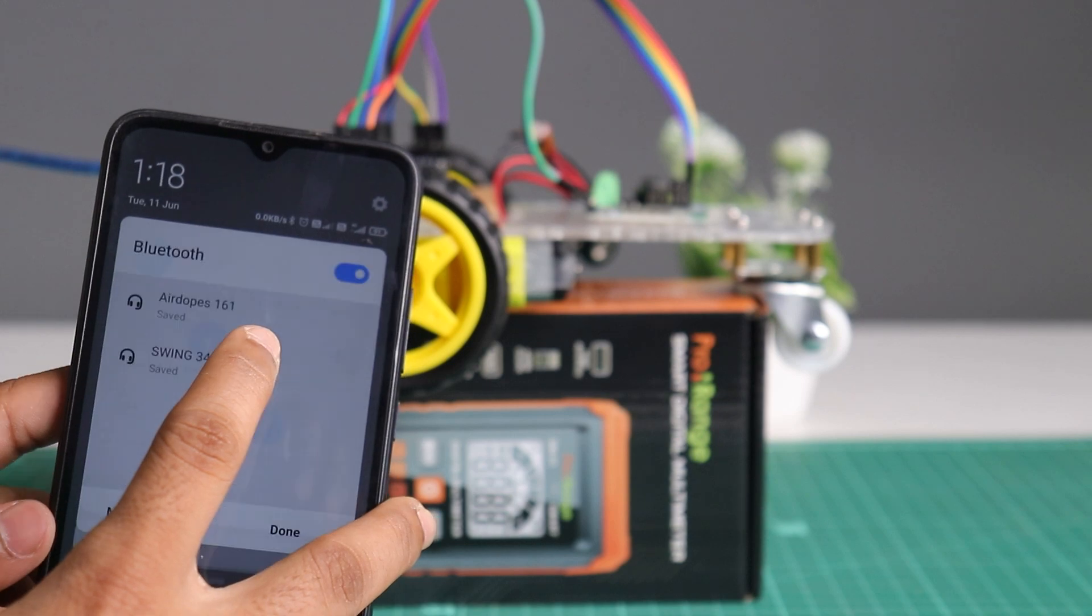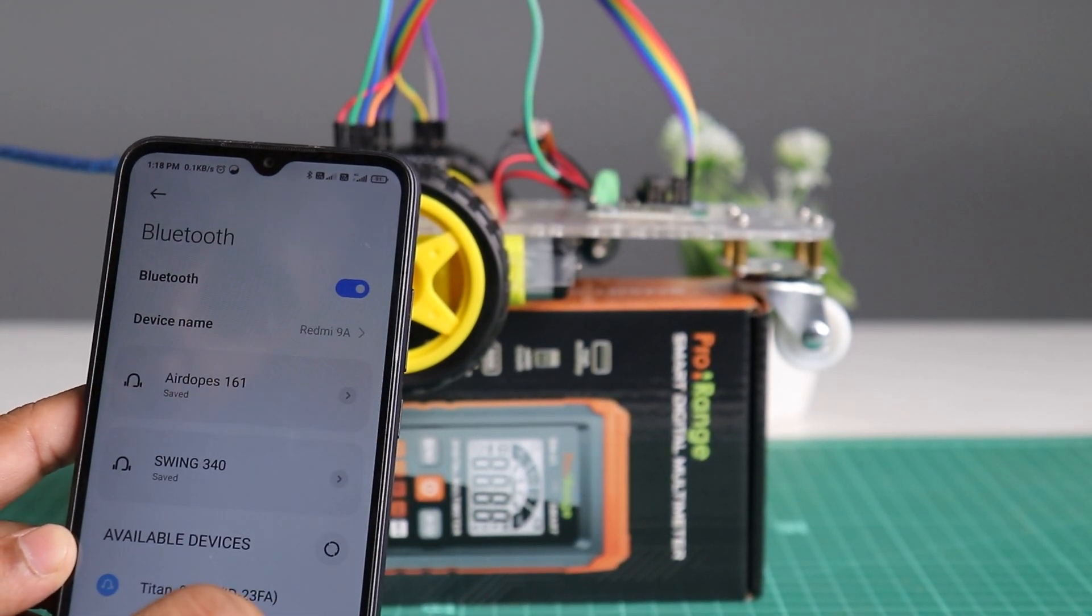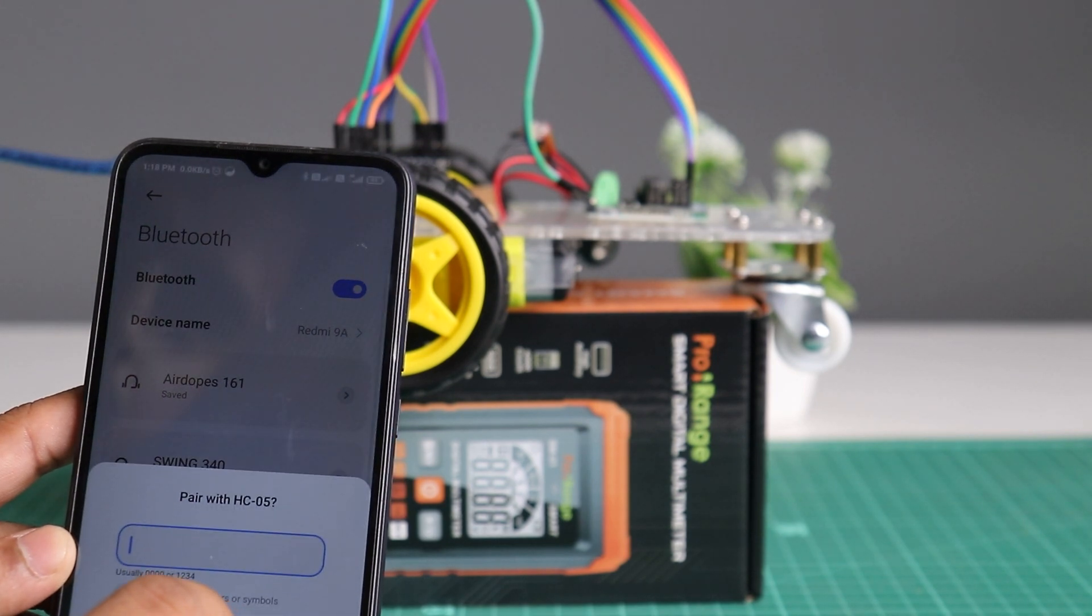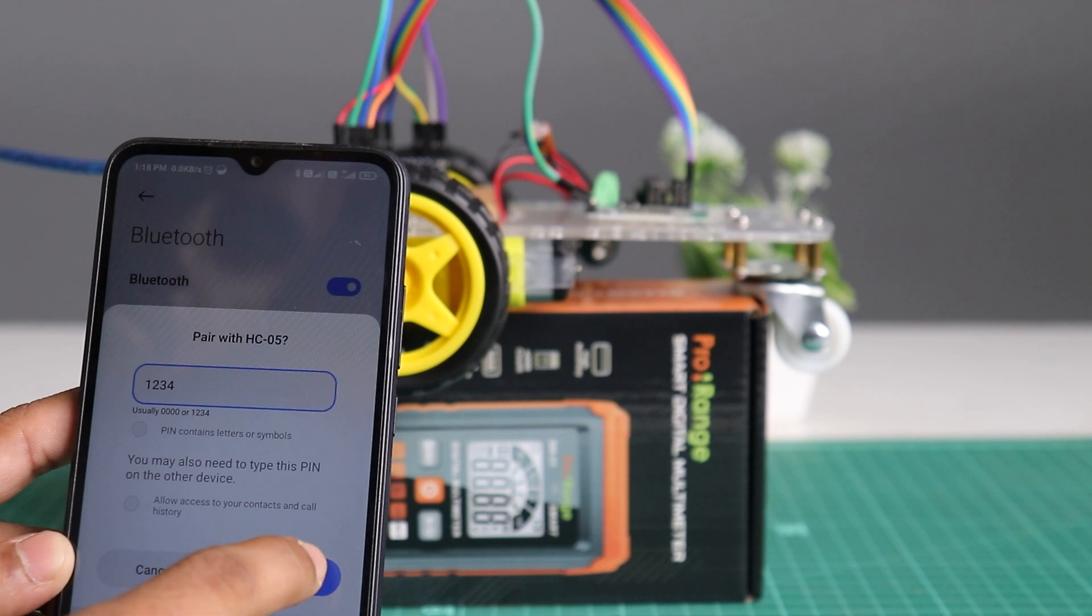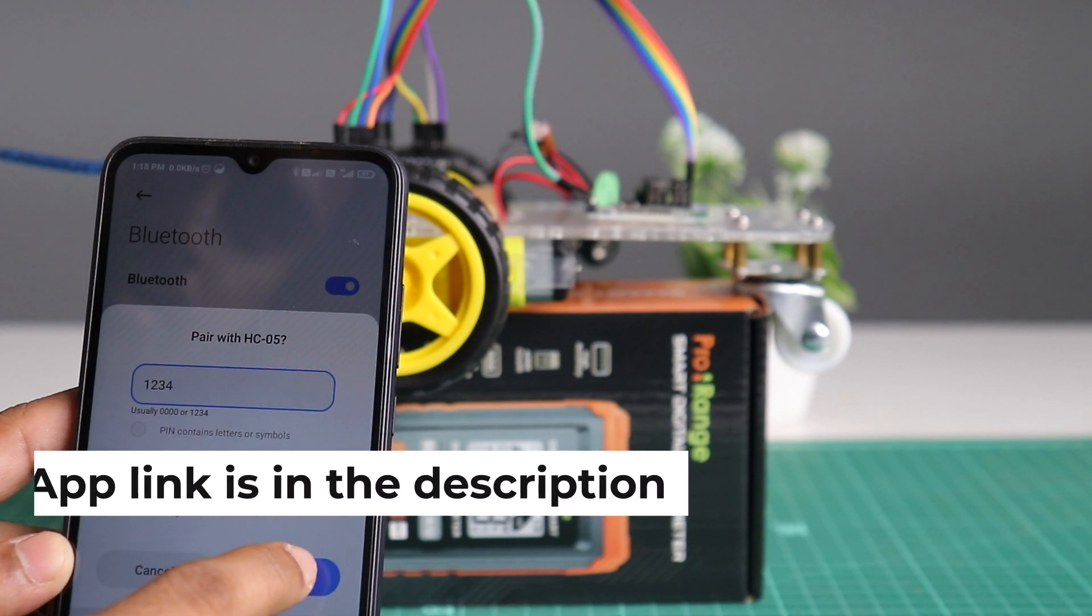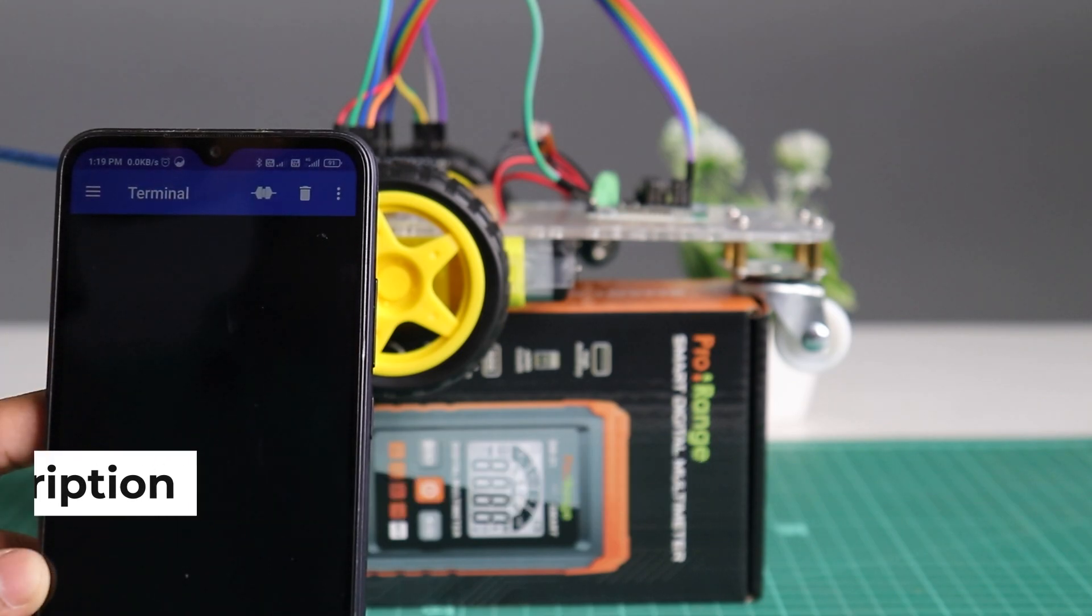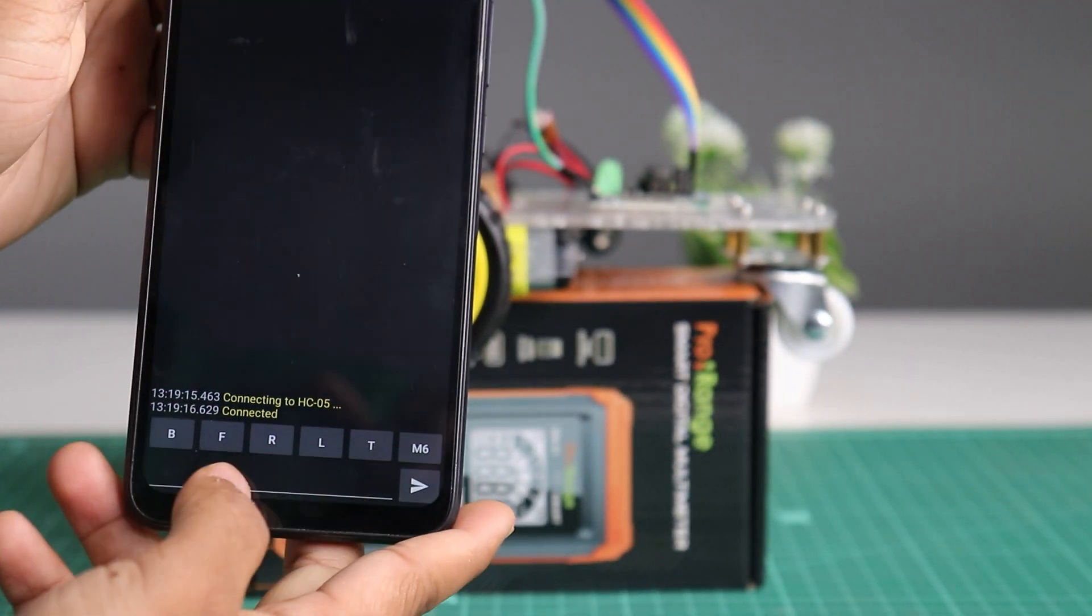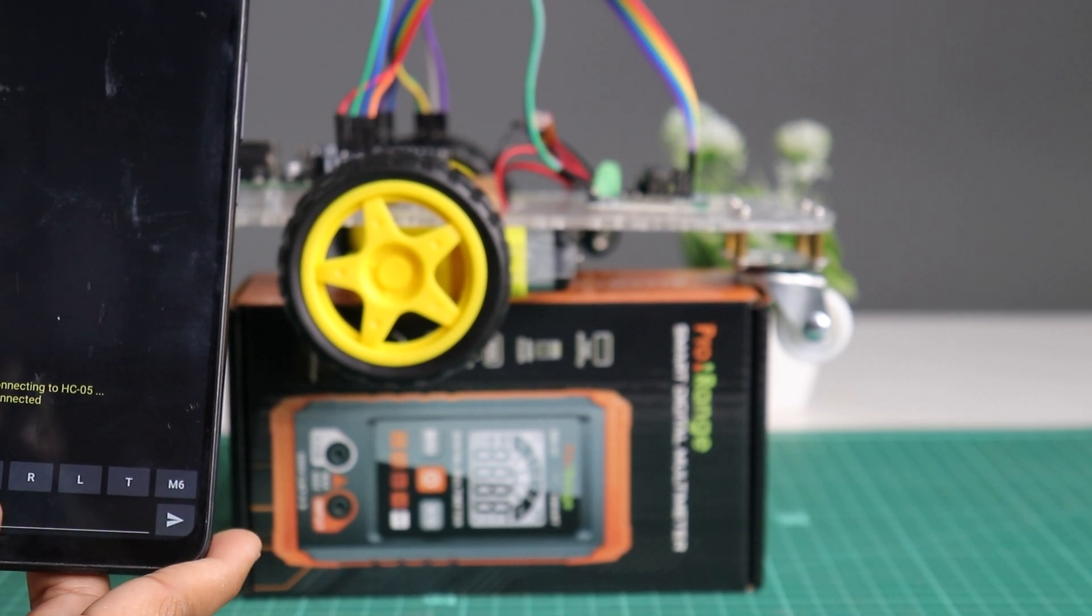Okay, let's pair HC05 with smartphone and test it. The device name HC05 will appear. Pair it with default password. After pairing, download the Bluetooth terminal app. Connect the HC05 and add the value and name to buttons as per the code.